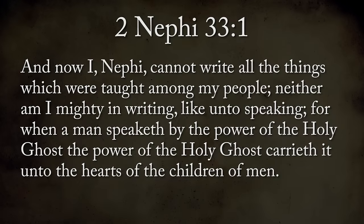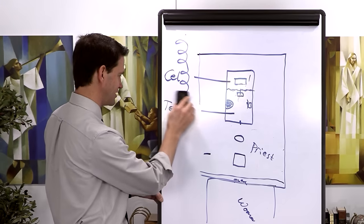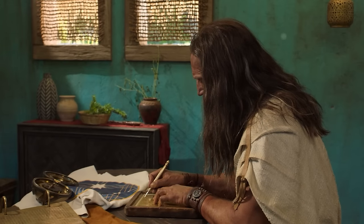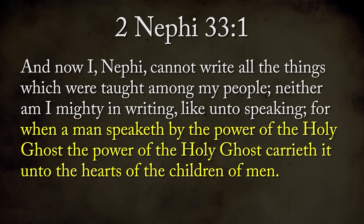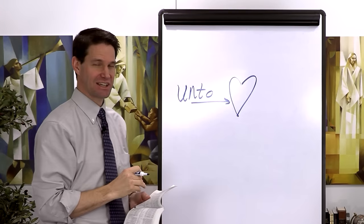Look at chapter 33, verse 1: 'Now I, Nephi, cannot write all the things which were taught among my people, neither am I mighty in writing like unto speaking.' How many times have you read 1 and 2 Nephi and thought Nephi was a bad writer? If you're like me, you think this guy is phenomenal with words. But look what he says: 'When a man speaketh by the power of the Holy Ghost, the power of the Holy Ghost carrieth it unto the hearts of the children of men.' Just like the discussion of 'in' versus 'on' the path, there's another interesting preposition here: 'unto' rather than 'into.'